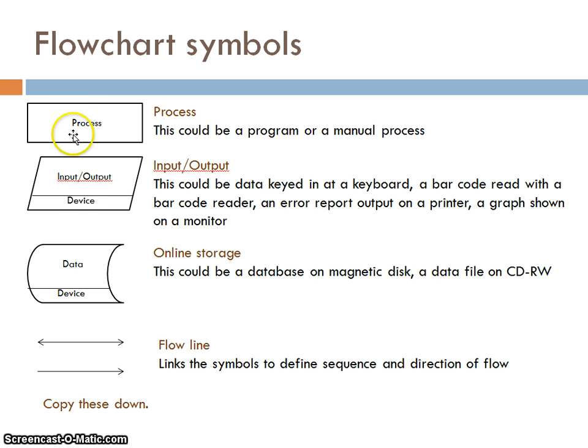The next symbol, which is a tilted rectangle, gives us any kind of input and any output and the device that's used for that input or output. So this could be data that's keyed in a keyboard, data from a barcode reader, from a barcode scanner. It could be an error report output onto a printer, a graph shown on a monitor. Your device would be something like printer, monitor, keyboard, barcode reader, flatbed scanner.